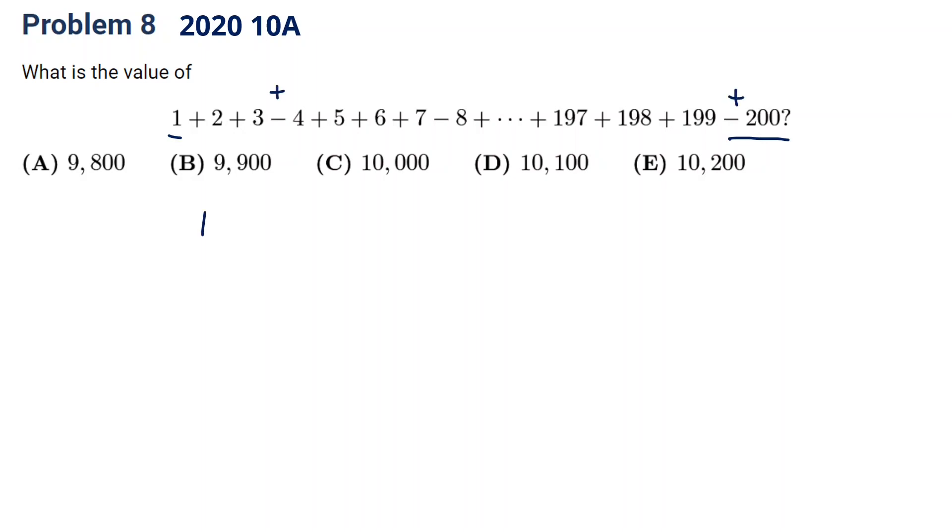then we just do 1 plus 200 times 200 divided by 2. But those 4, 8, like the next one is 12 and 16, they are all minus.